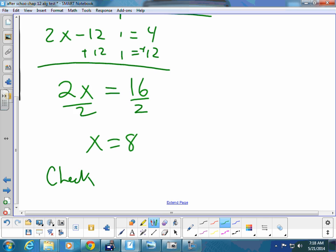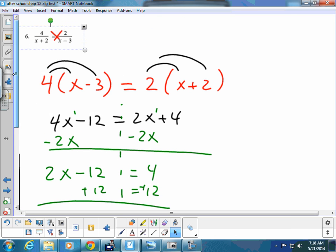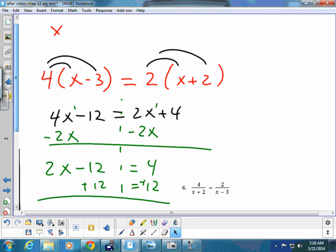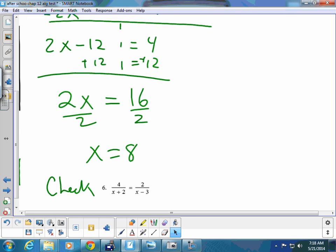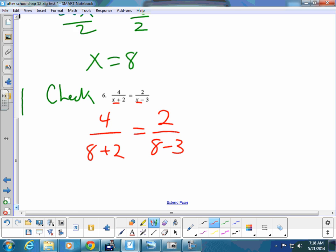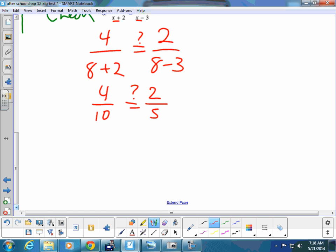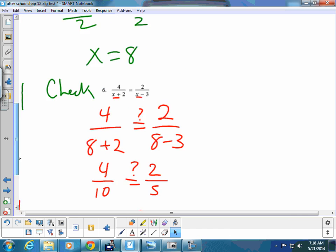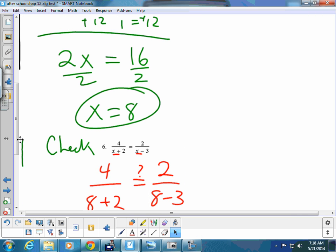Now, this on the test is going to say check. So what are we checking? Well, we need to go back up to the top and check this with our answer. So we're going to run the check, and the check is going to be put in an 8 wherever you see an x. So is 4 over 8 plus 2 equal to 2 over 8 minus 3? Well, 4 over 8 plus 2 is 4 over 10. And 2 over 8 minus 3 is 2 over 5. If we reduce this, this is 2 fifths, and it checks. But remember, your actual answer is way back here, x equals 8. So you do need to show checks on the test.